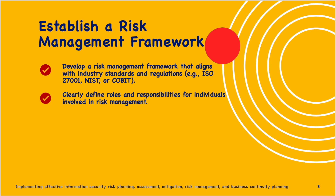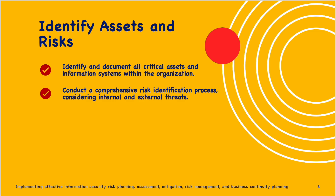The second step is to identify assets and risks. Identify and document all critical assets and information systems within the organization. Conduct a comprehensive risk identification process and consider internal and external threats. The process of identifying assets and risks is a critical step in information risk planning — by understanding what assets an organization has and the potential risks they face, it becomes possible to implement effective risk management strategies.